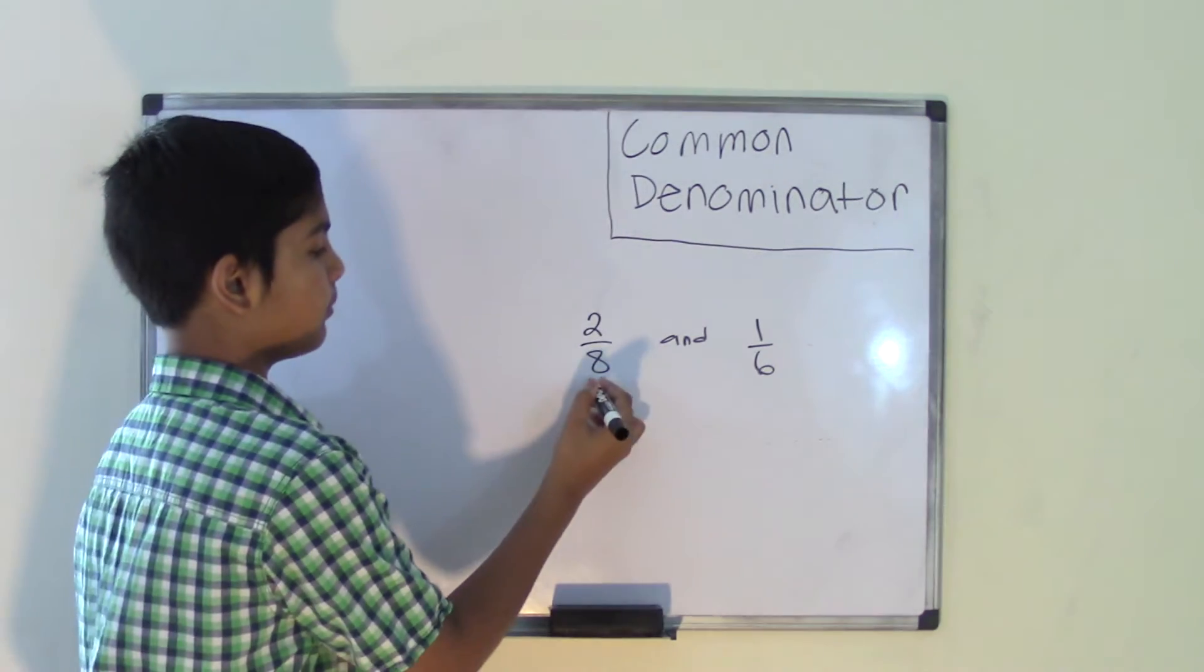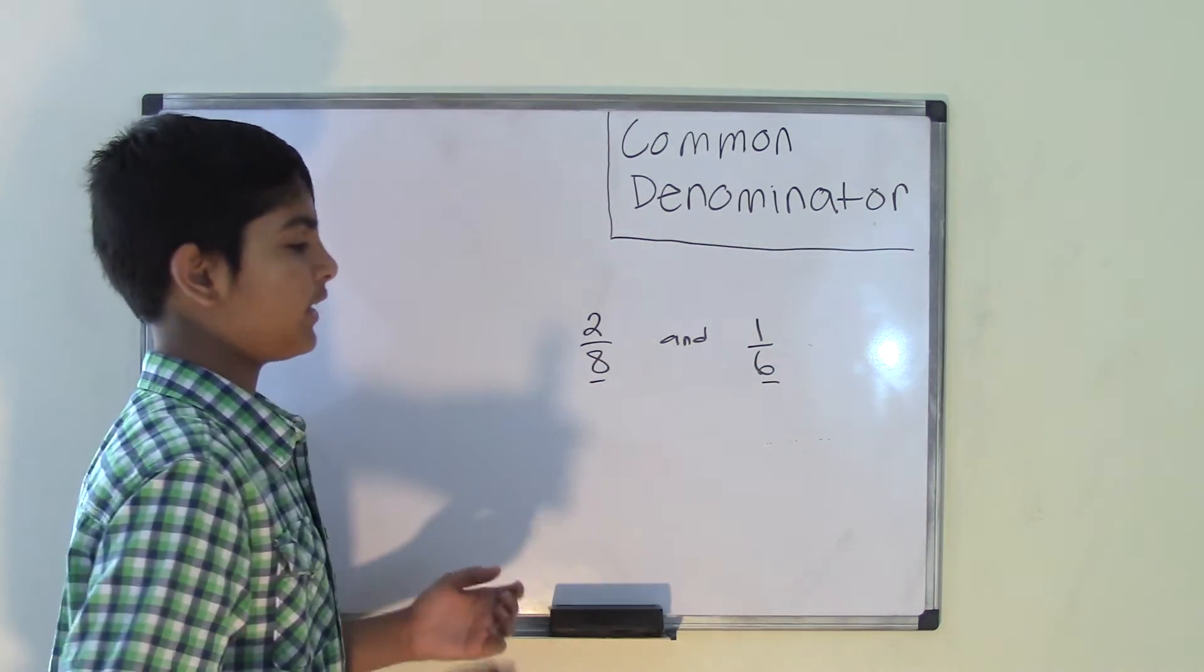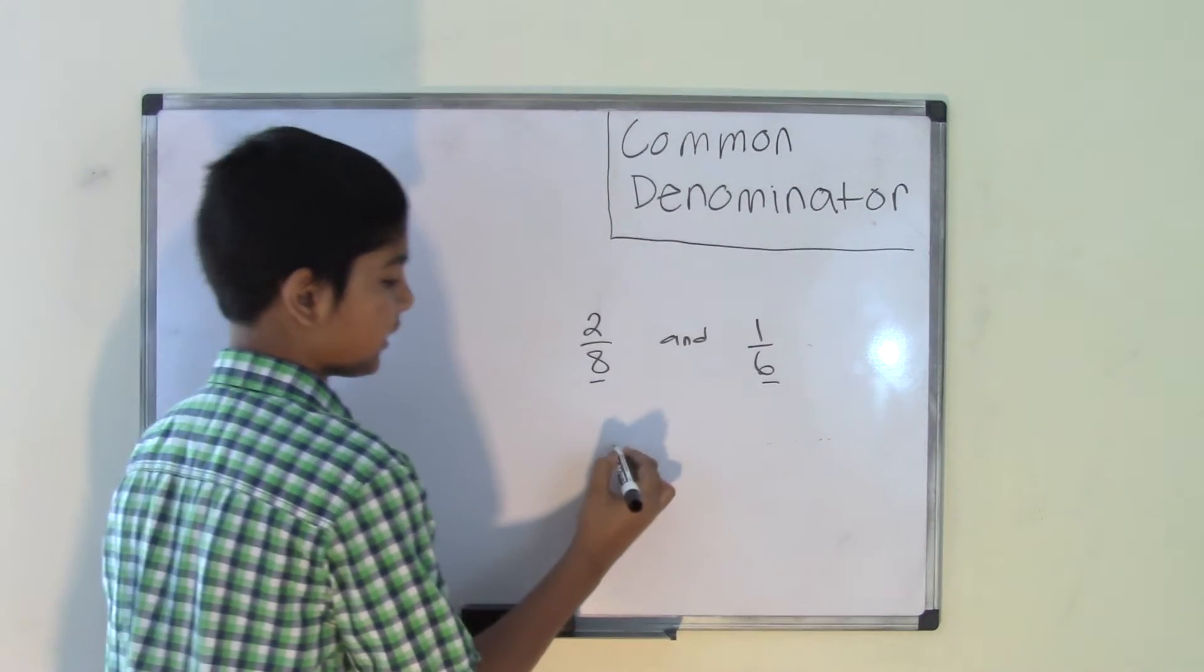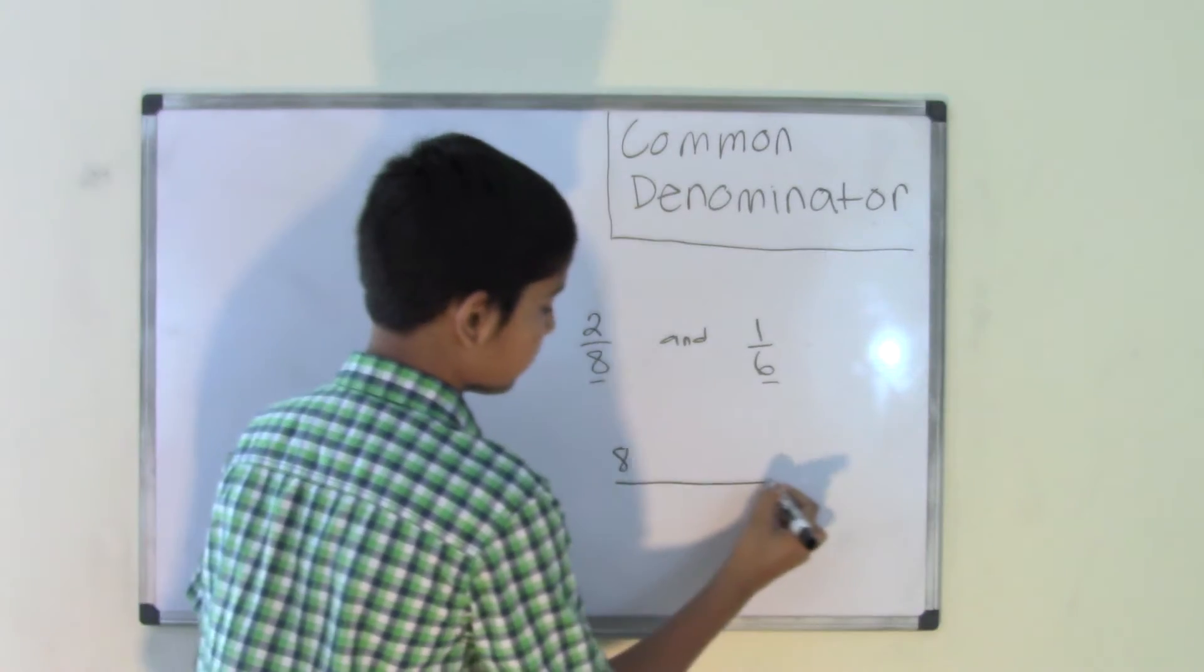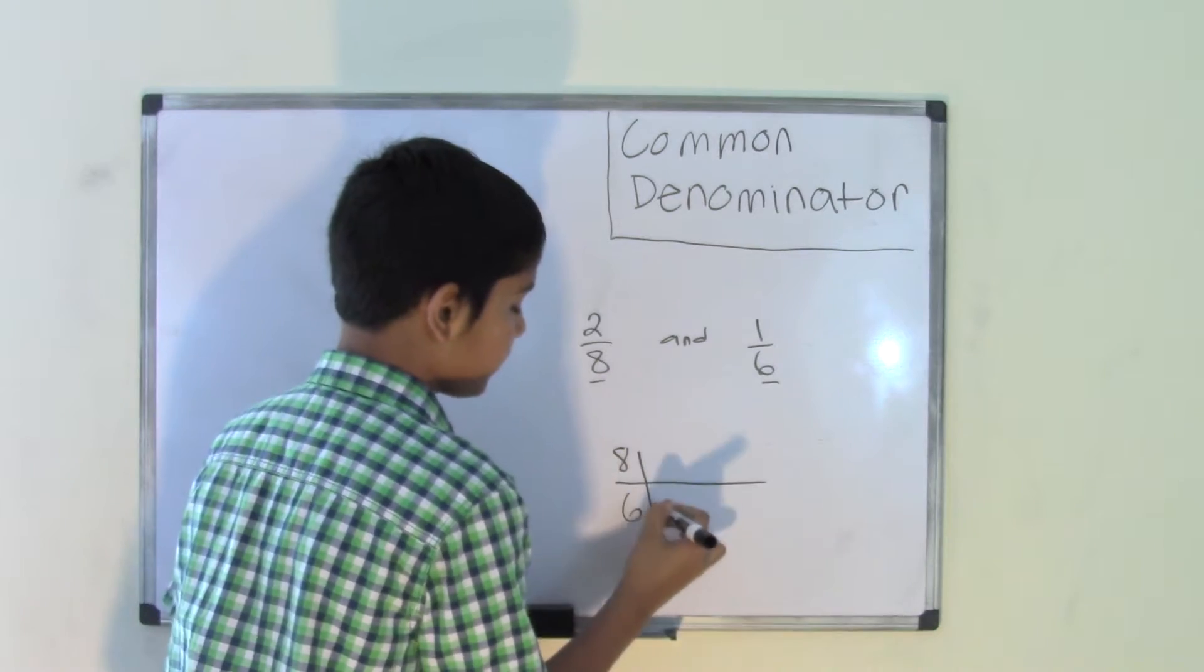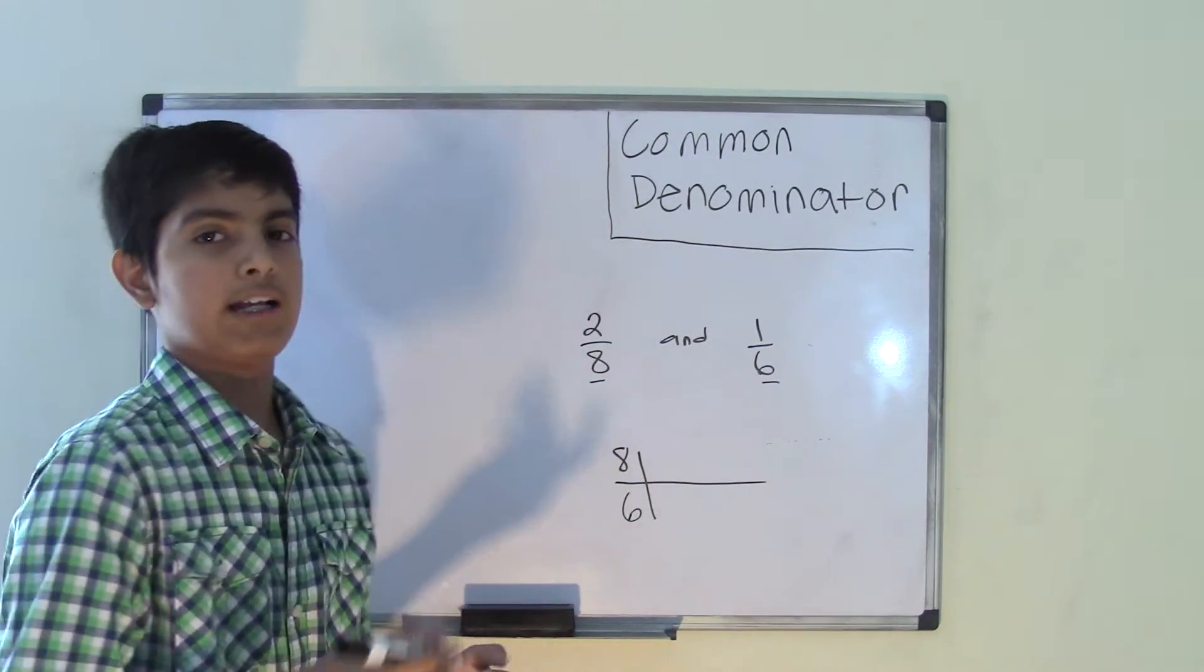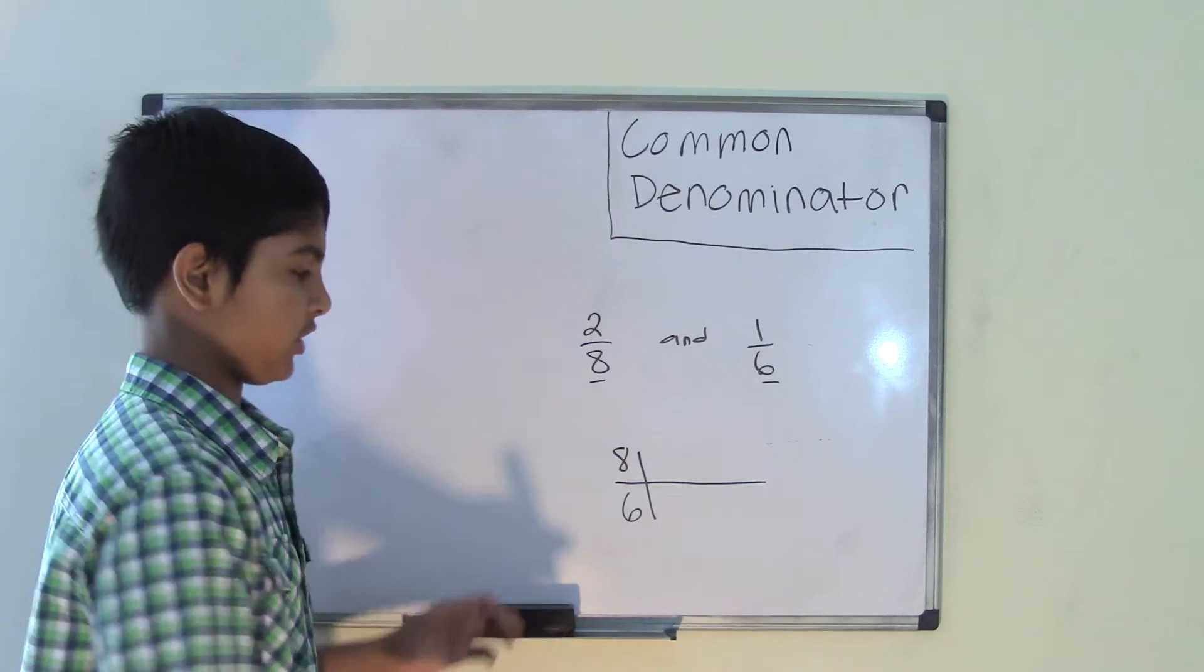To do that, we have to take both of the denominators and find the LCM for those two denominators. So the denominators are 8 and 6. The LCM means the least common multiples. If you don't know how to find the LCM, I'll show you how.